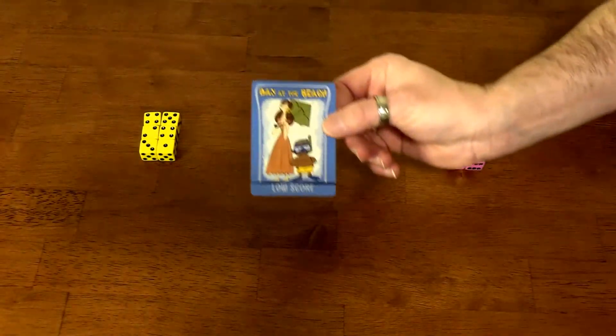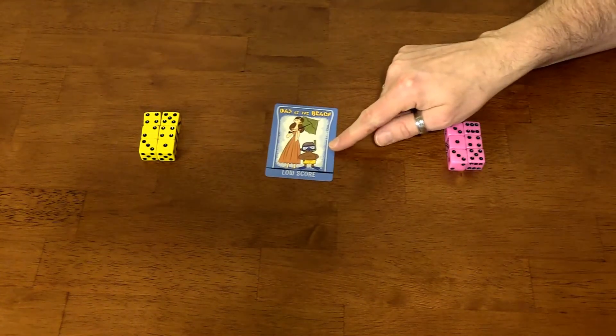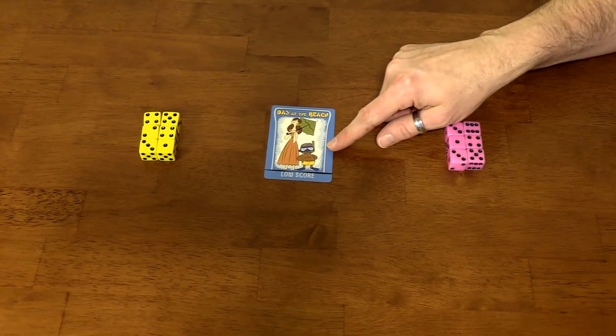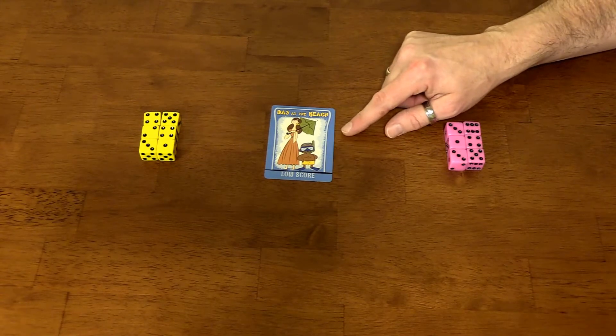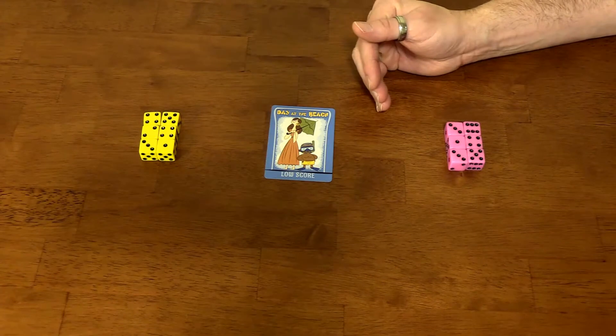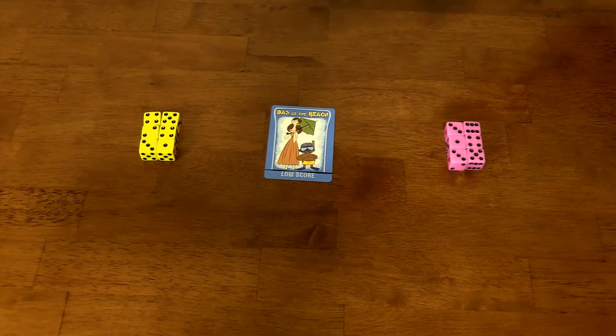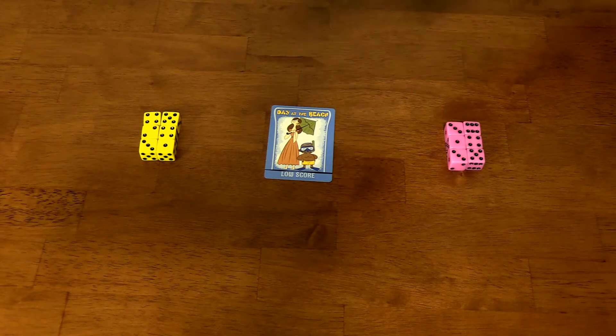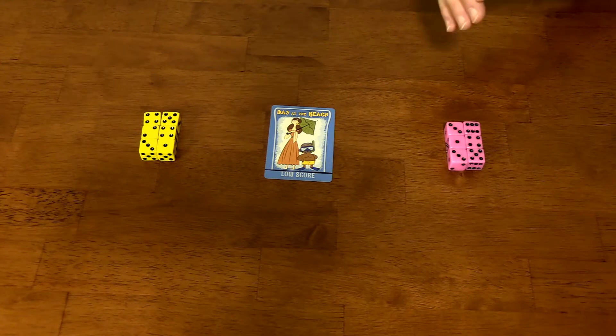This duel is called Day at the Beach. Out of all of the duels in the game, this one is the only one that is cooperative. Both players are going to work together to try to stack dice and cards into a tower. The more dice that you stack into that tower, the more points that both players are going to make at the end.